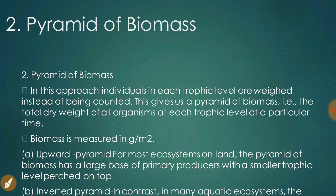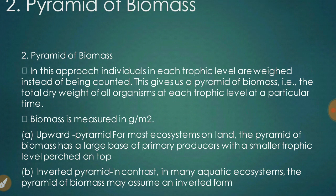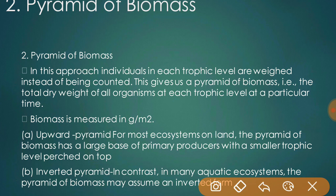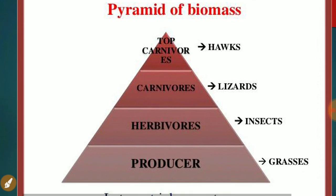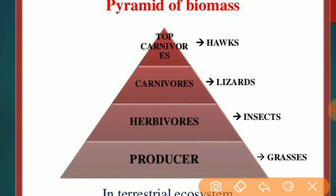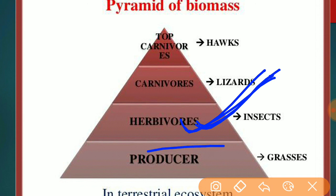The second type of ecological pyramid is the pyramid of biomass. To overcome the shortcomings of the pyramid of numbers, the pyramid of biomass is used. In this approach, individuals at each trophic level are weighed instead of counted. This gives the total dry weight of all organisms at each trophic level at a particular time. The pyramid of biomass is usually determined by collecting all organisms at each trophic level separately and measuring their dry weight.